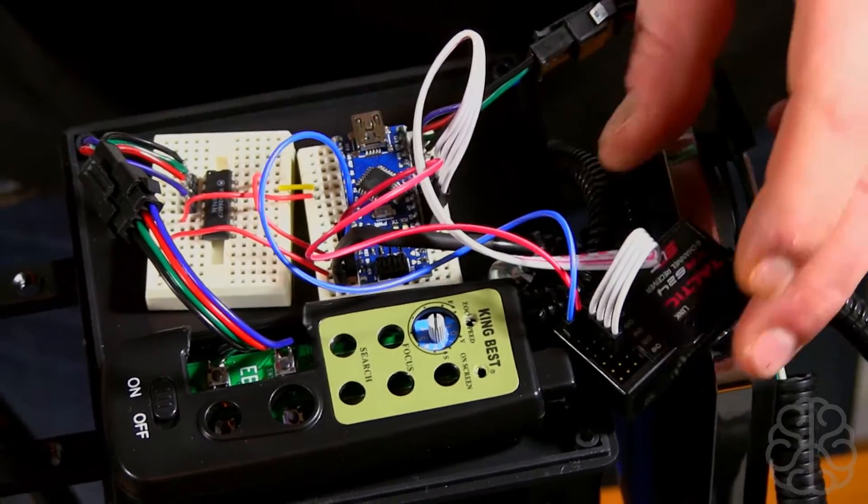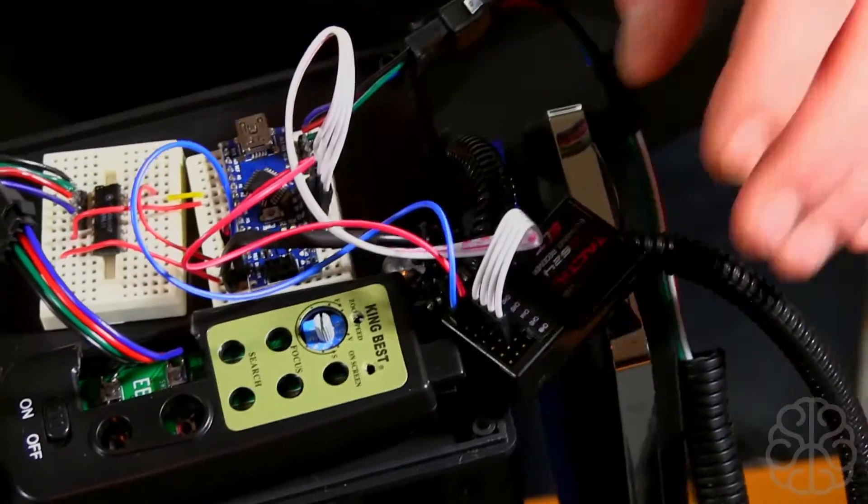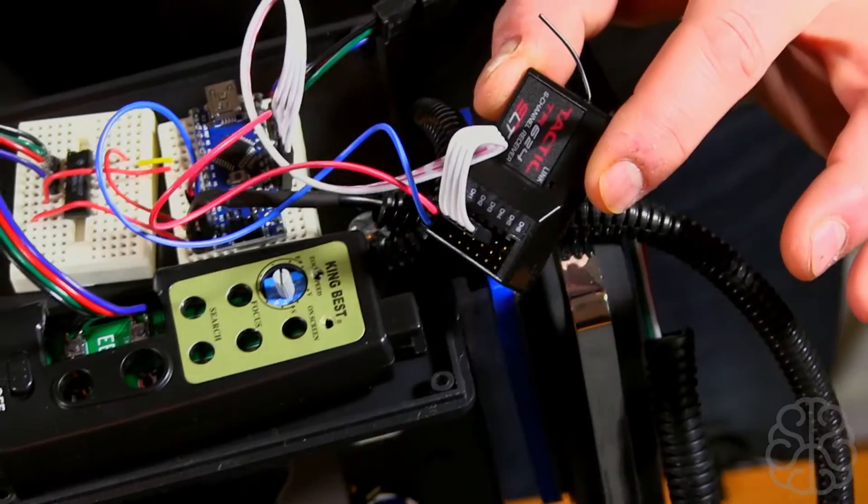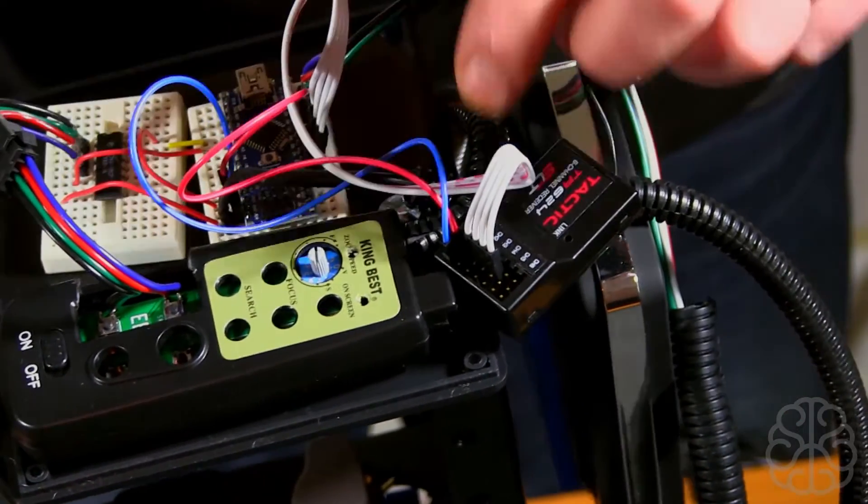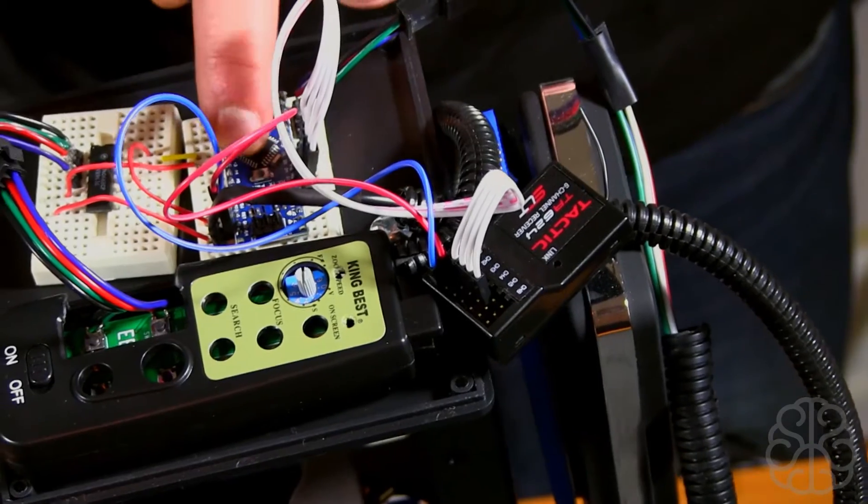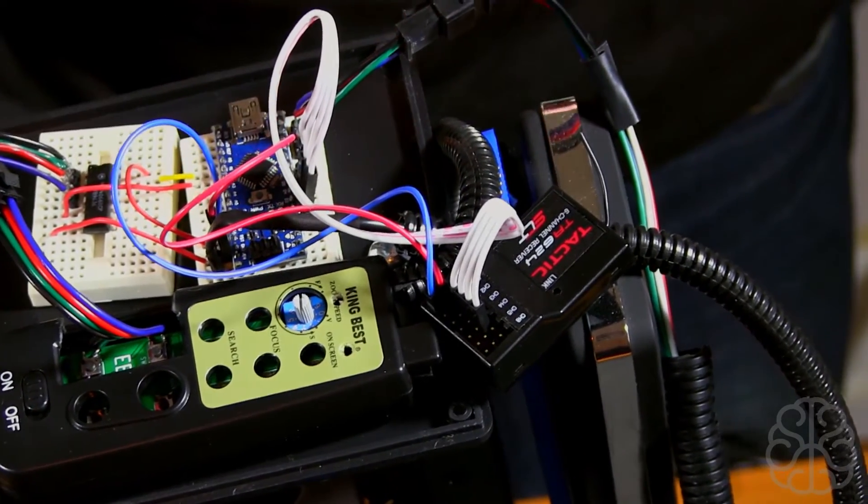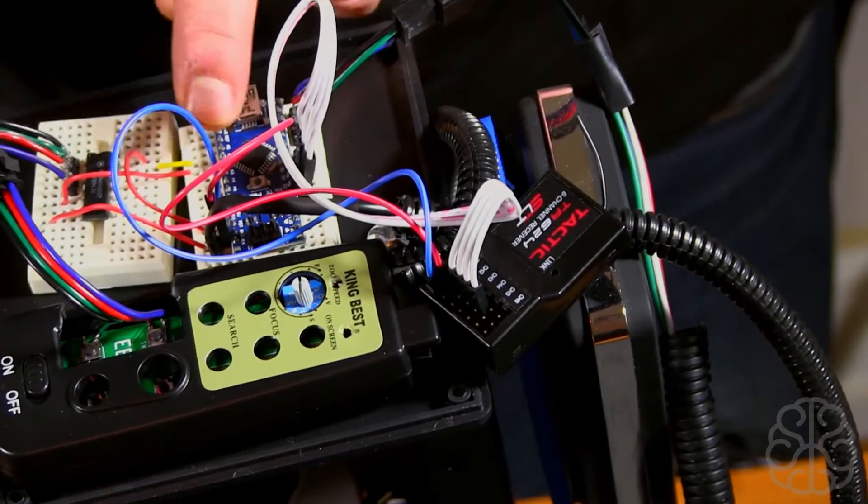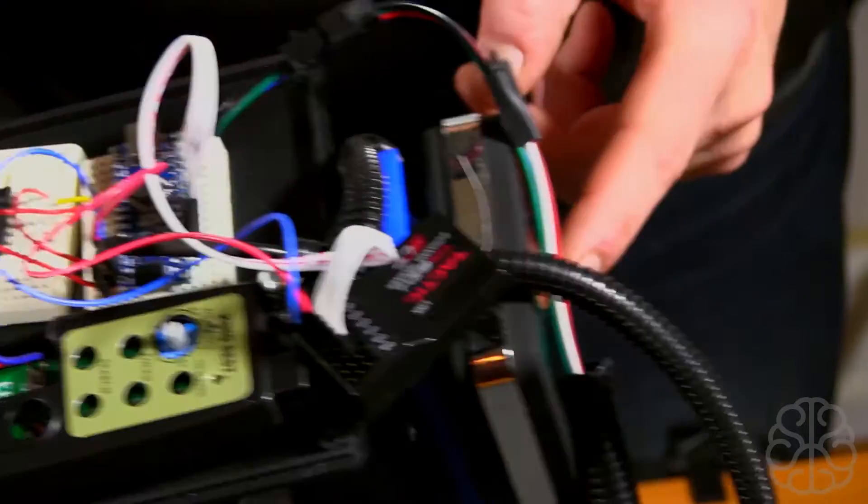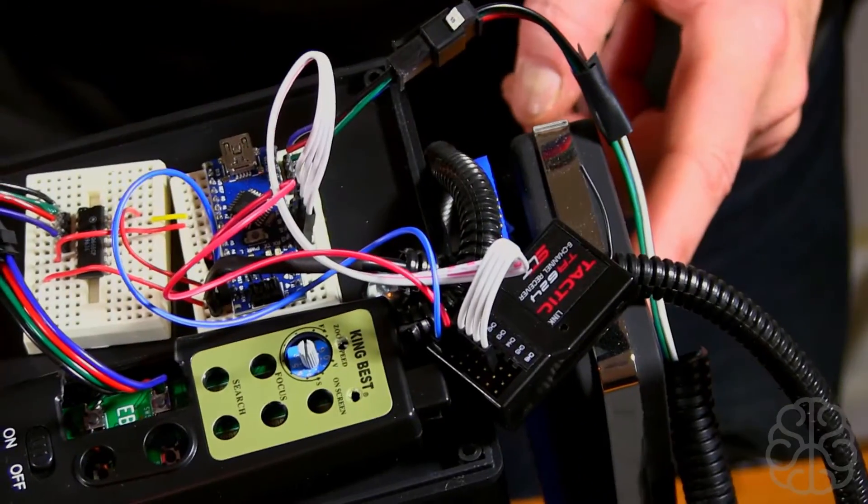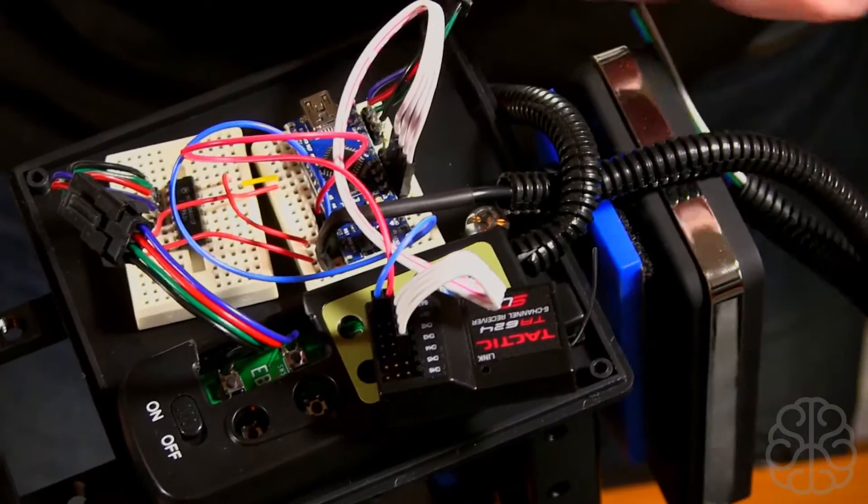This is the receiver that we saw in the last video. The receiver is being powered directly from the nano, and the nano is being powered by the battery with the USB port.